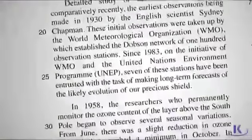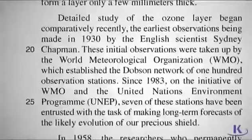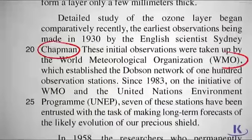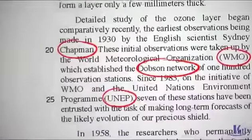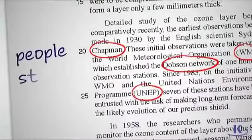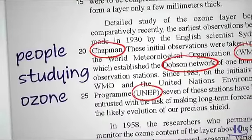Now onto the third paragraph. Here you learn who has been studying the ozone layer — Sydney Chapman, the World Meteorological Organization, the Dobson Network, and the United Nations Environment Program. It's not important to recognize these names or to have prior knowledge about any of these people or groups. If a question is asked about them, you'll know exactly where to find the answer. Finally, take a brief note — "people studying ozone" — and move on to the next paragraph.